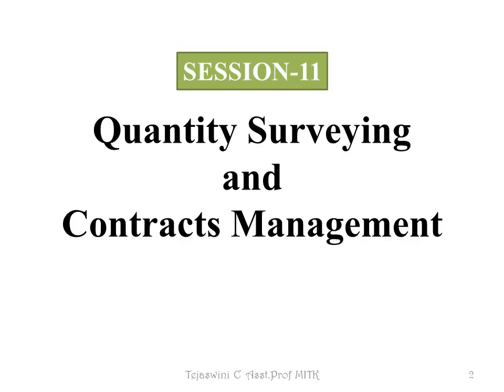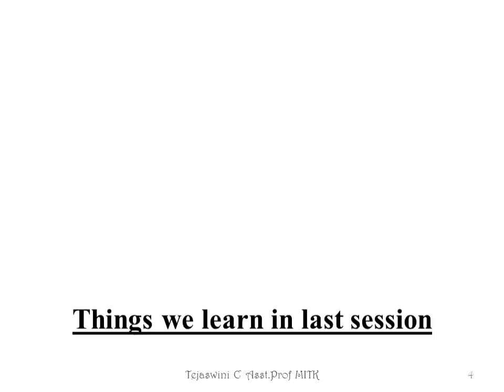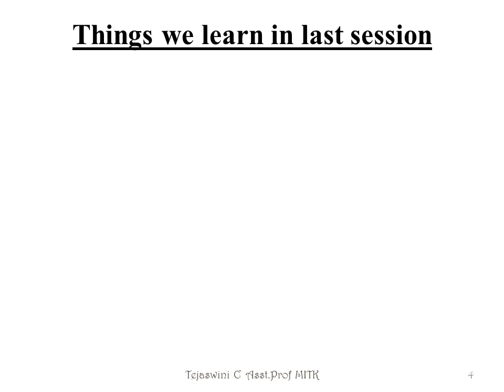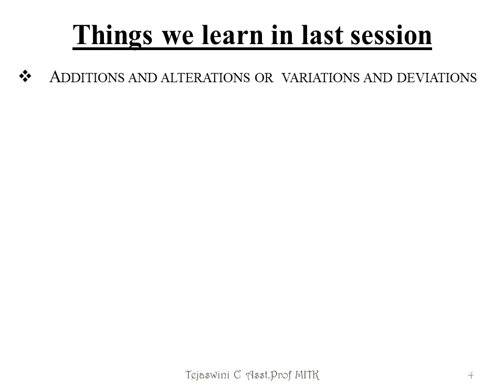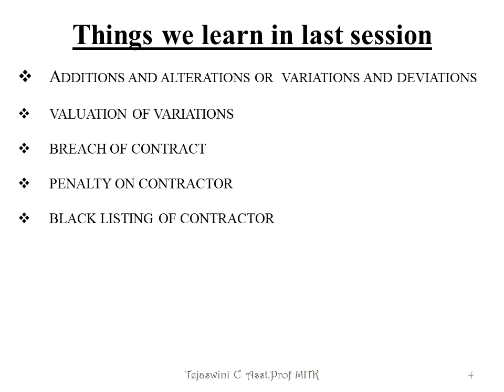Hello everyone. This is the 11th session of Quantity Surveying and Contract Management, Module 5. Things we learned in the last session are: Additions and Alterations or Variations and Deviations, Valuation of Variation, Breach of Contract, Penalty on Contractor, and Blacklisting of Contractor. These are all the things we learned in the last session. I hope everyone is following.